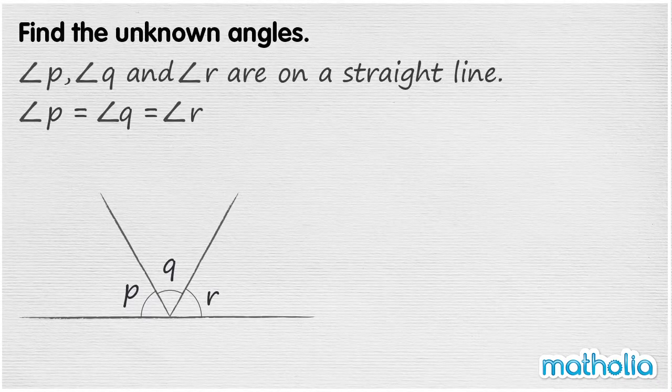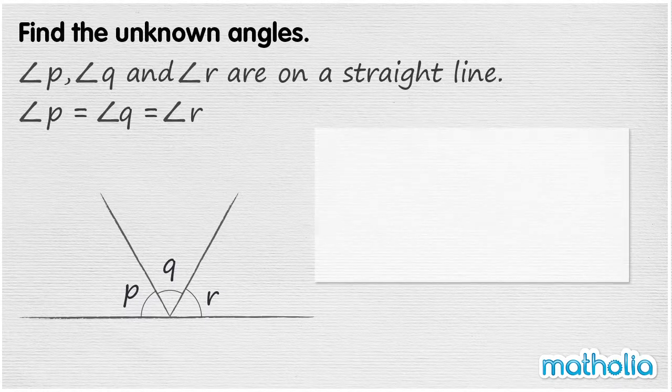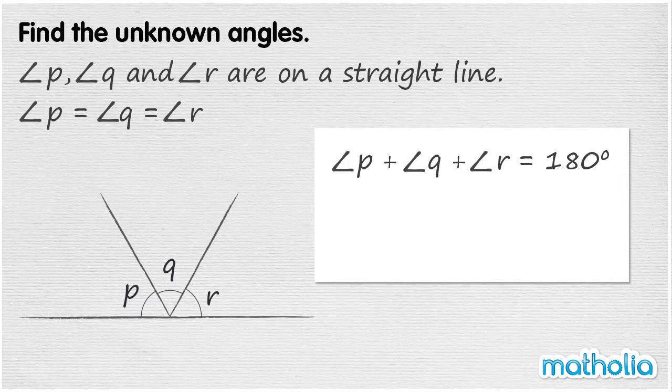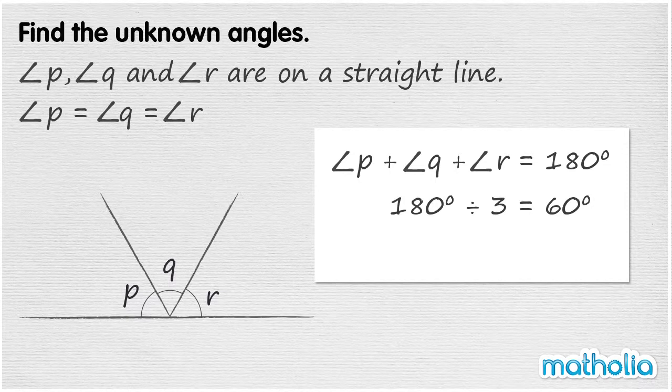Find the unknown angles. Angle P, angle Q and angle R are on a straight line. Angle P, angle Q and angle R are all equal. So their sum must be 180 degrees. To find their value, we divide 180 degrees by 3. 180 degrees divided by 3 equals 60 degrees. So angle P, Q and angle R are all 60 degrees.